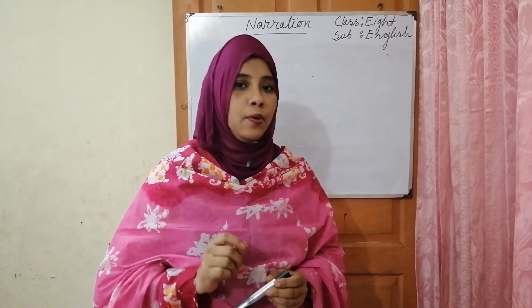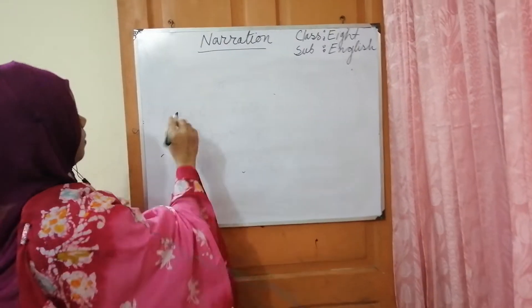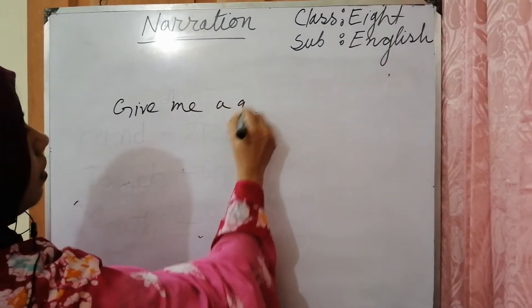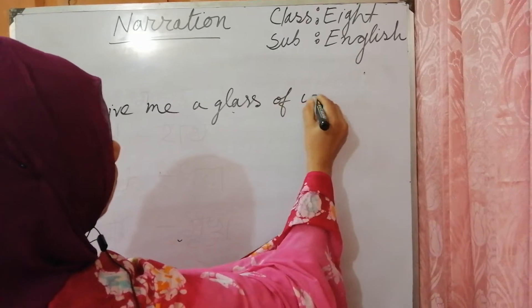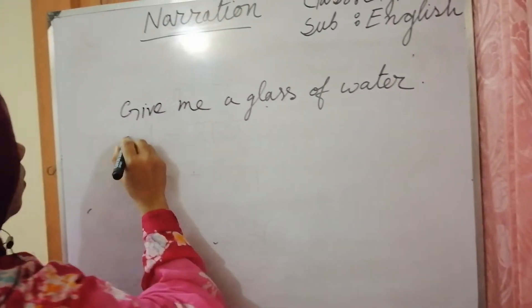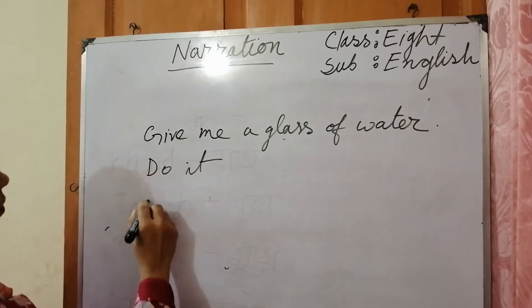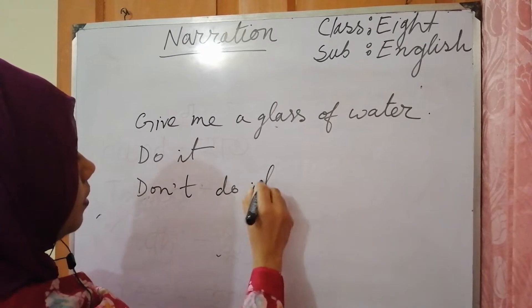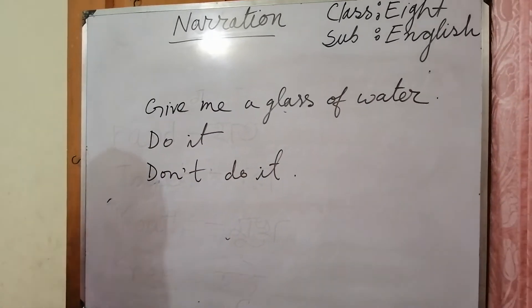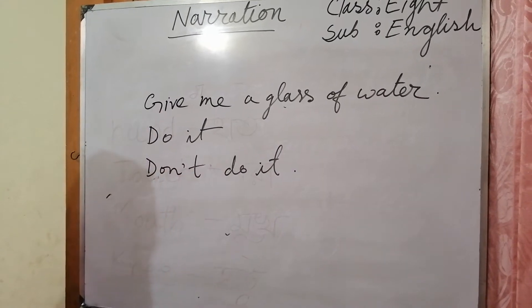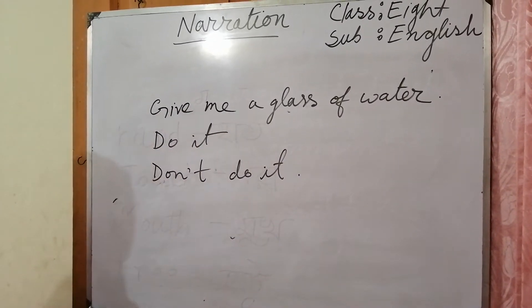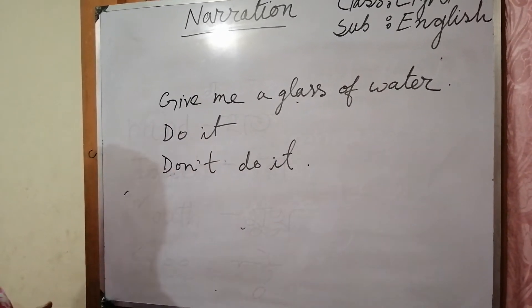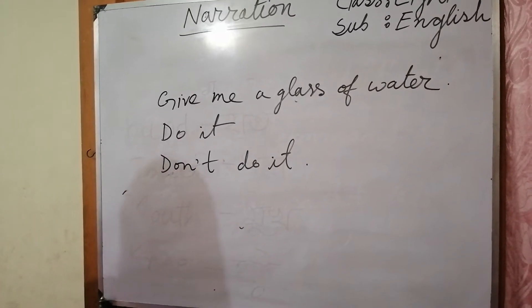Let's have some examples, then you will understand it better. For example: 'Give me a glass of water.' 'Do it.' 'Don't do it.' So dear learners, we can see that the imperative sentence starts with the verb directly. We don't see any subject before the verb. So we will learn how to change those kinds of imperative direct sentences into indirect.